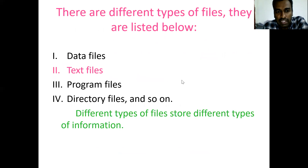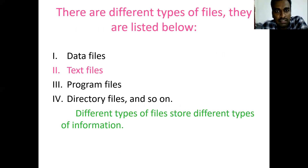We have different types of files: data files, text files, program files, and directory files. In data files, we store data or information. Text files are used to store text — either a document or similar content. Program files store programs. Directory files are used to store files as directories. These are the different types of files.